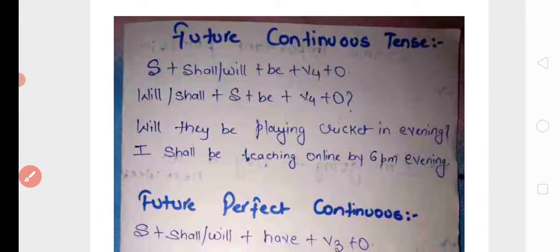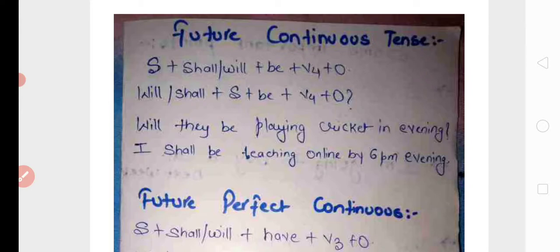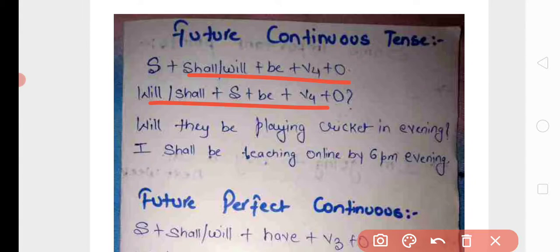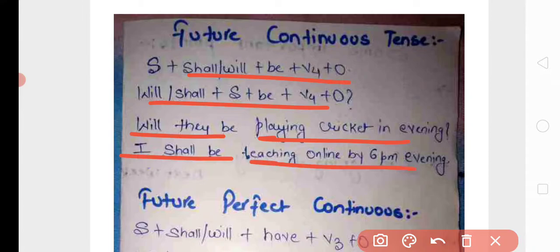Future continuous tense: just like present and past continuous, but here we use shall/will plus 'be' plus V4. Examples: 'Will they be playing cricket in the evening?' (کیا وو لوگ شام کو cricket کھیل رہے ہوں گے؟), 'I shall be teaching online by 6 p.m.' (میں شام کو چھ بجے پڑھا رہا ہوں گا).